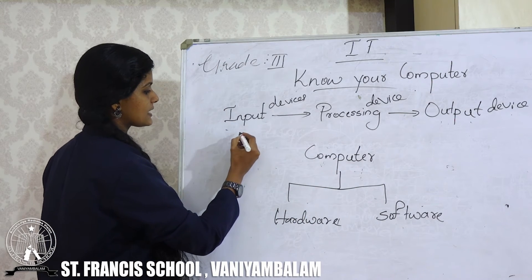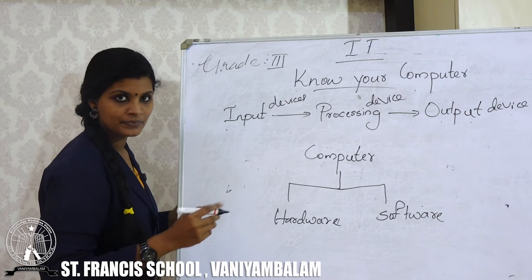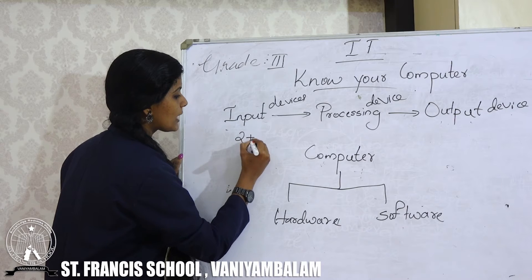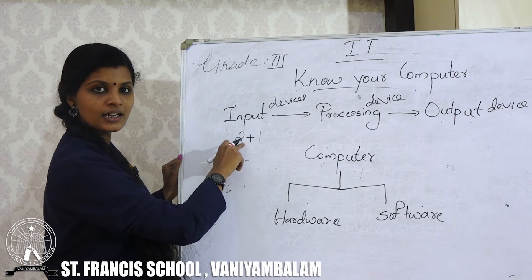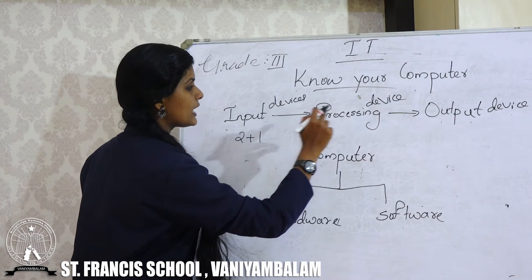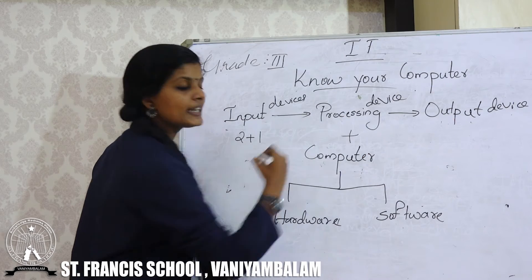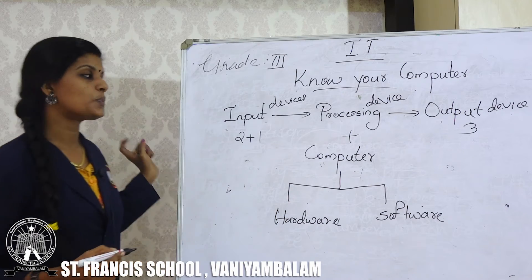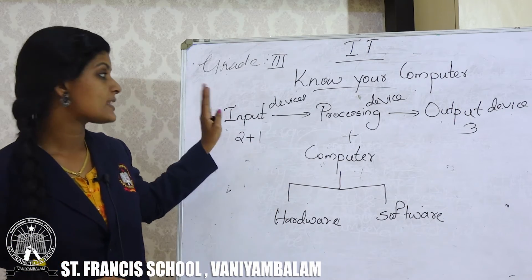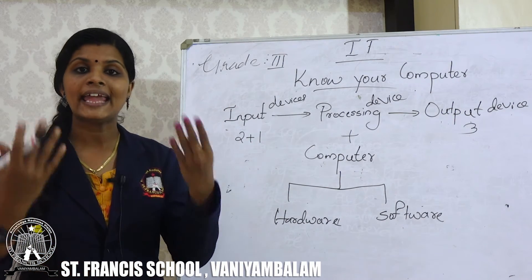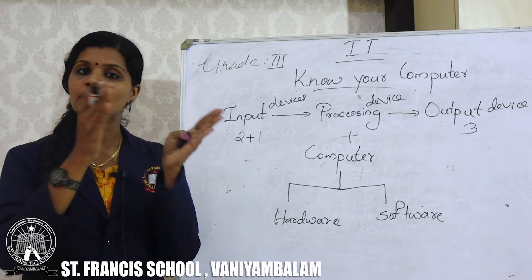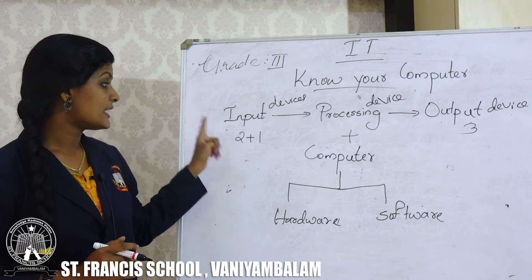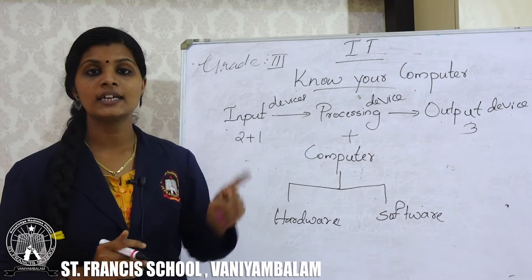Once again, let me show you an example. If we want to add 2 plus 3, that is the input we are going to enter into the computer. This will go into the processing device and addition will be done. The result will be 5. This way, all the operations are performed in the computer — first enter the data, then an operation is performed, and at last we get a result.